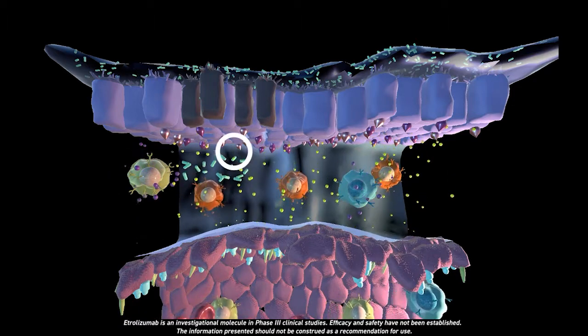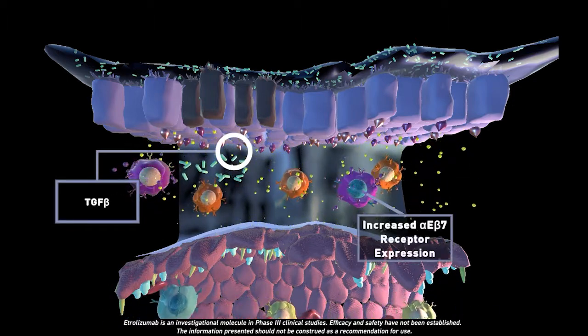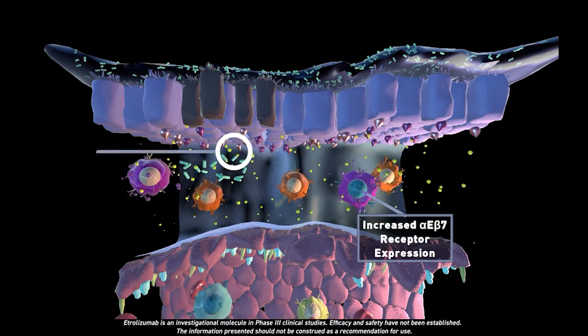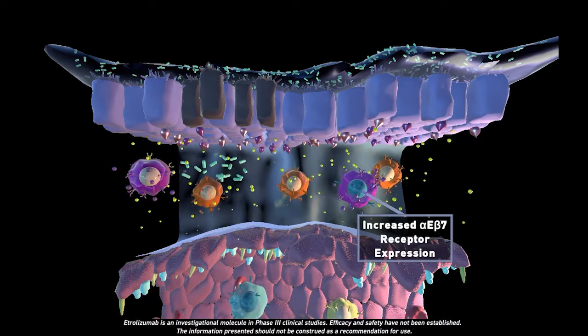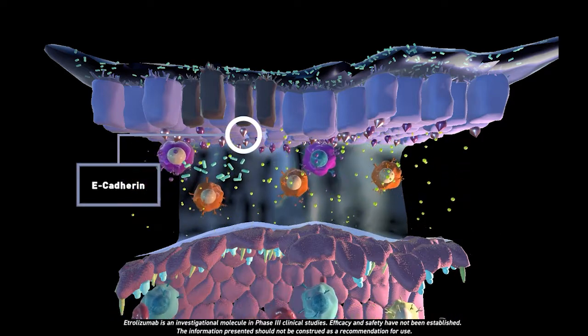Furthermore, TGF-beta secretion by gut cells leads to increased expression of alpha-E-beta-7 receptors on T cells in the lamina propria, allowing T cell binding to E-cadherin expressed on the surface of gut cells.